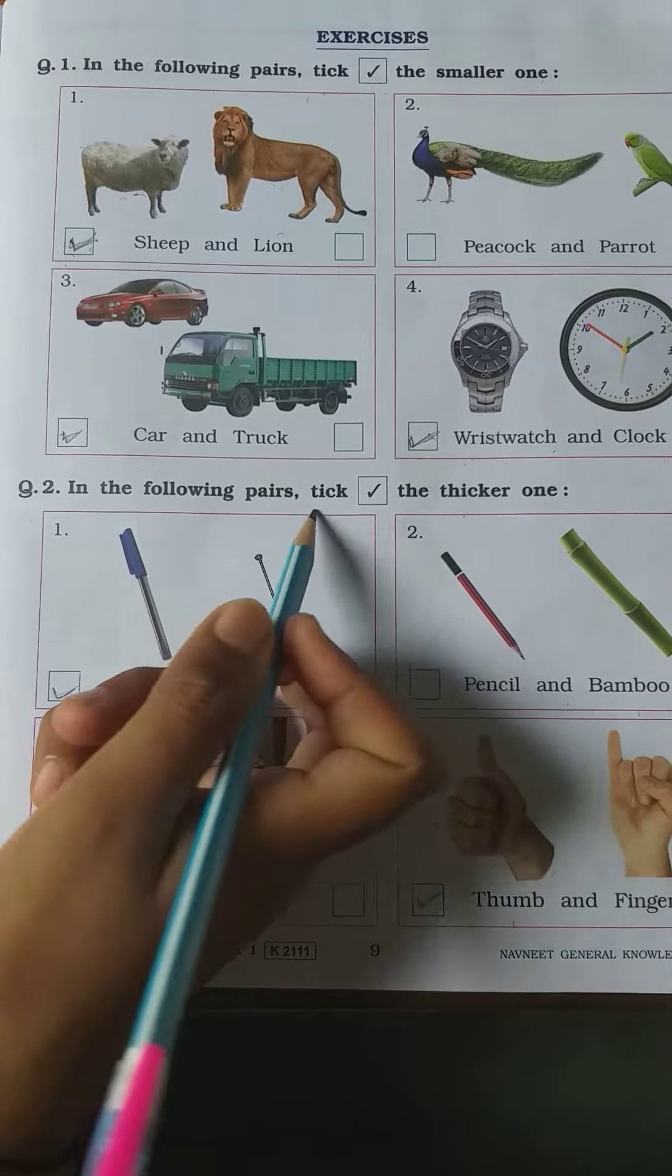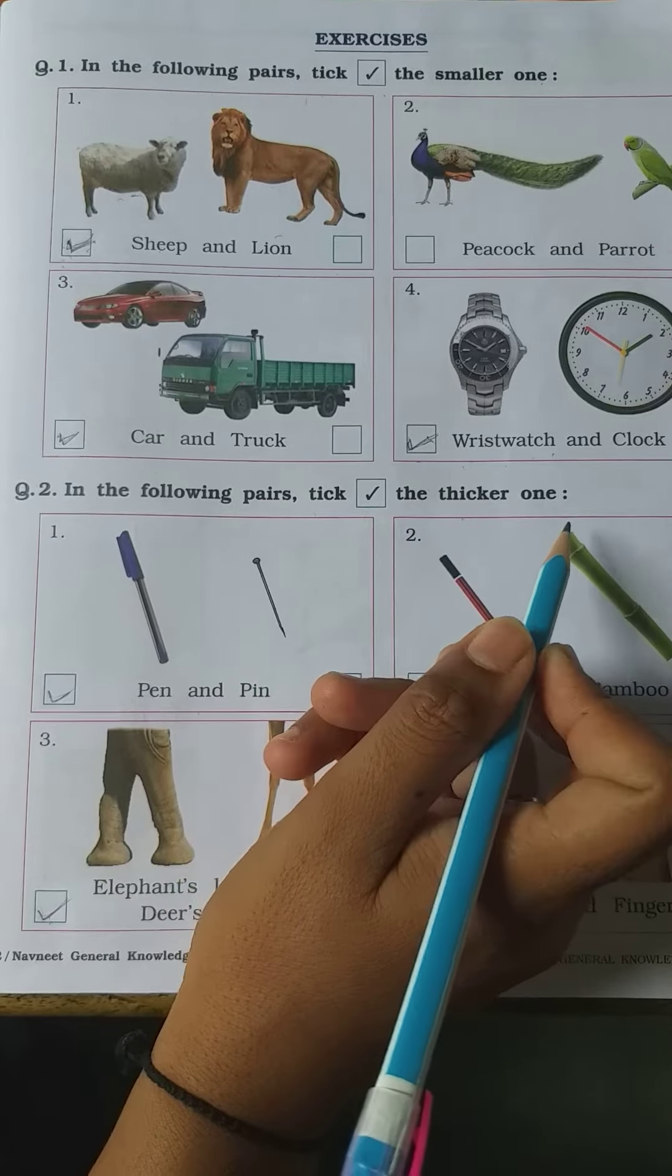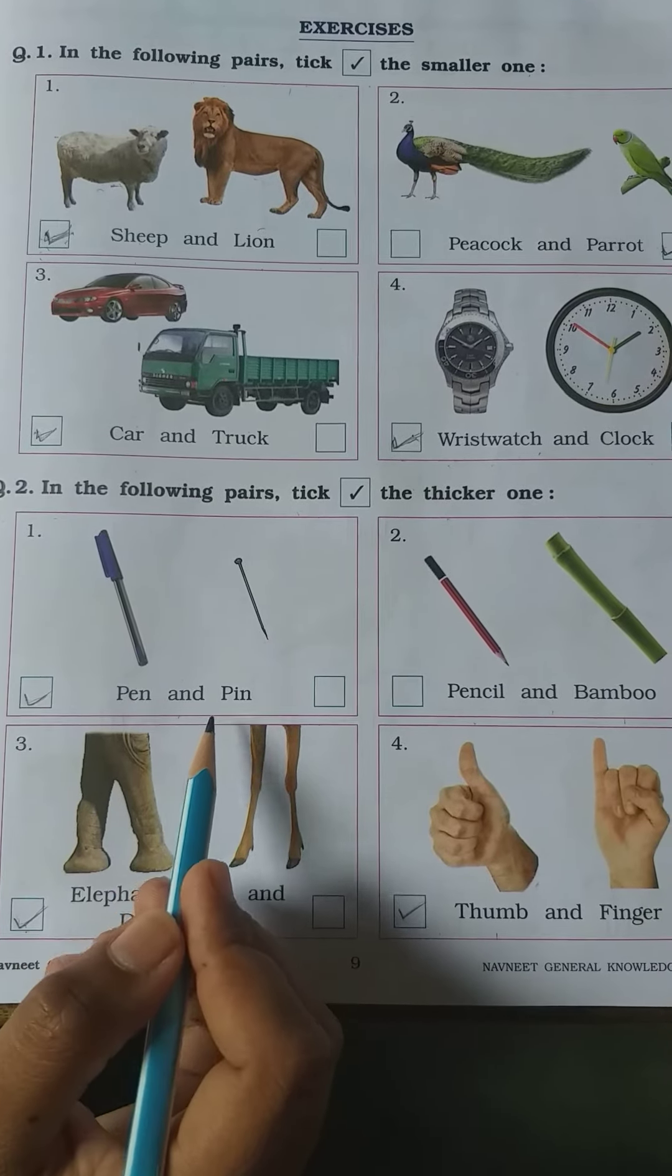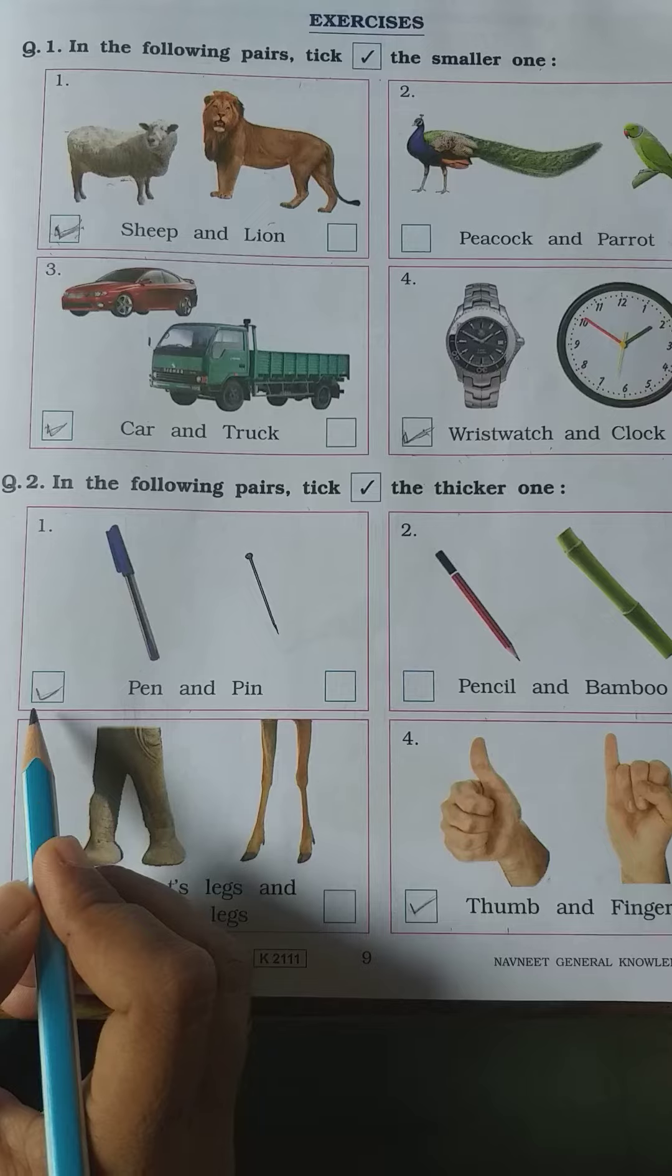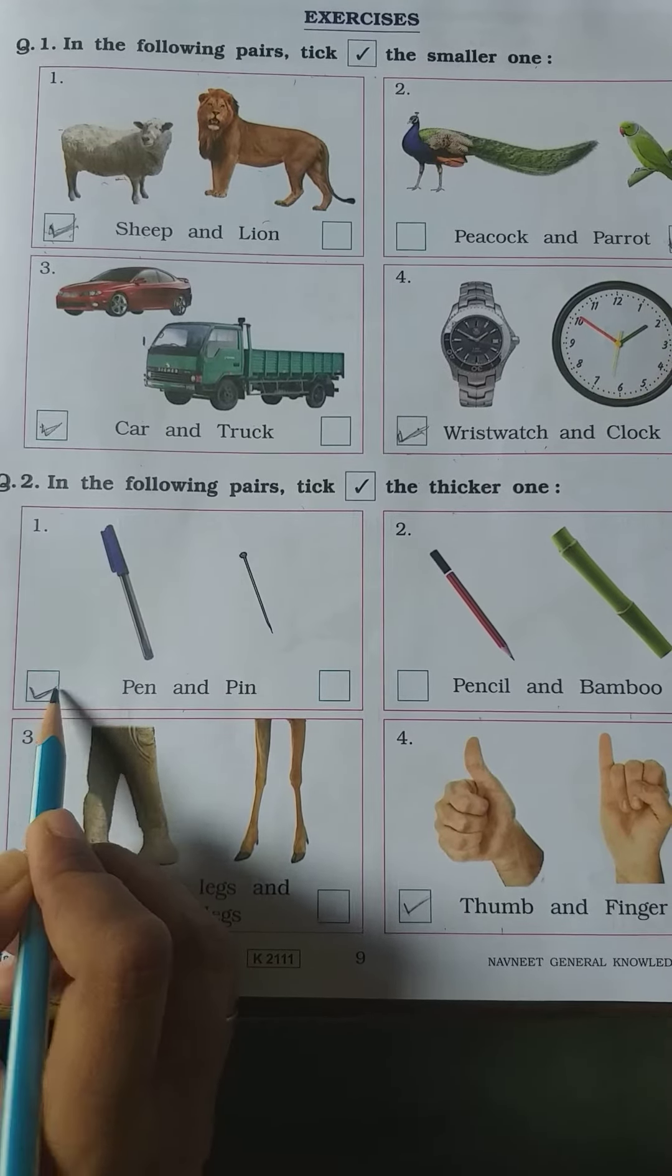Question Number 2: In the following pairs, tick the thicker one. Number 1: pen and pin. Pen is thicker, tick in pen.